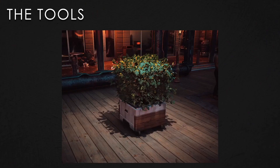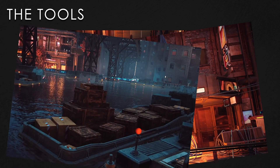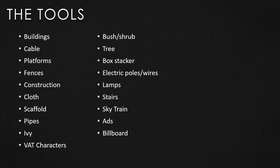We built a variety of tools - from a scrub tool to make foliage, to a cable tool that can simulate inside the game engine, to a stacking tool to stack different objects on boats or other places in the scene, and of course the building tool. In total we have around 19 different tools: building, cable, platform, fences, cloth, pipes, stairs, train, and so on. The artist would pick whichever tool they needed for a given task and be able to work faster.